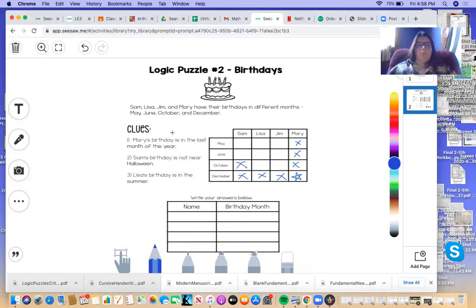Lisa's birthday is in the summer. So we've got May, June, October. June is in the summer. So we can put a star for Lisa in June and cross off all the other stuff for Lisa. And look at that.